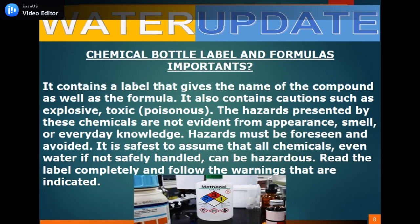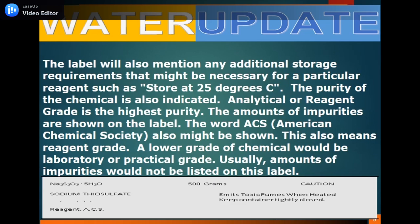Chemical bottle label and formulas importance. The label gives the name of the compound as well as the formula, and also contains hazard warnings such as explosive or toxic. The hazards represented by these chemicals are not evident from appearance, smell, or everyday knowledge — hazards must be foreseen and avoided. It is safest to assume that all chemicals, even water if not safely handled, can be hazardous. Read the label completely and follow the warnings indicated. The label also mentions storage requirements such as store at 25°C. The purity of the chemical is also indicated — analytical or reagent grade is the highest purity, and amounts of impurities are shown on the label. The word ACS (American Chemical Society) might also be shown, which also means reagent grade.